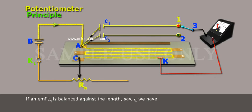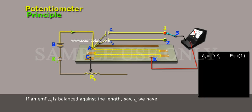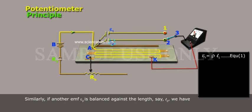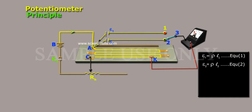If an EMF Epsilon-1 is balanced against the length, say L1, we have Epsilon-1 equals to rho L1, equation 1. Similarly, if another EMF Epsilon-2 is balanced against the length, say L2, we have Epsilon-2 equals to rho L2, equation 2. From equation 1 and 2, we have Epsilon-1 by Epsilon-2 equals to L1 by L2.